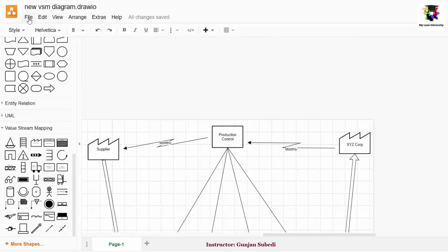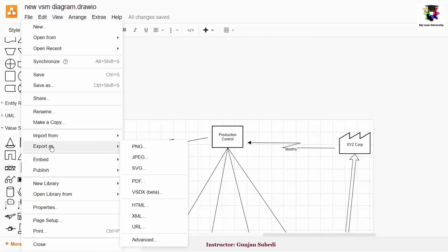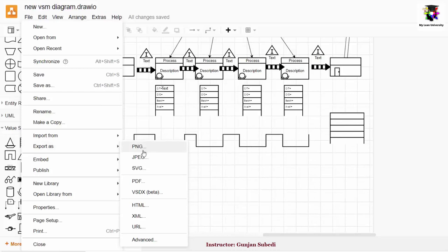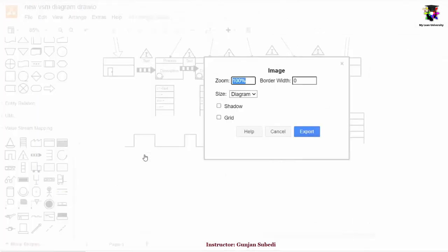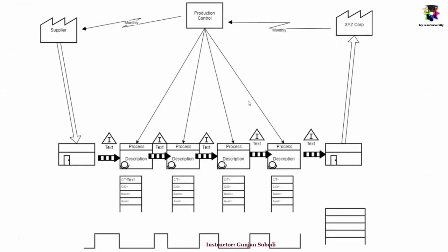After drawing the value stream map, you can go to the file and you can go to the export as and you can export this value stream map in any format that you like. Suppose I want to export it in form of the JPEG image. So for that, I click the JPEG and click on the export. So I have exported this value stream map in my device.